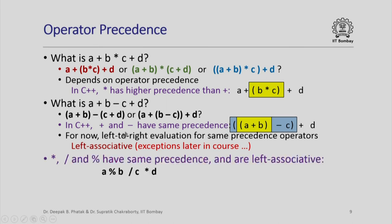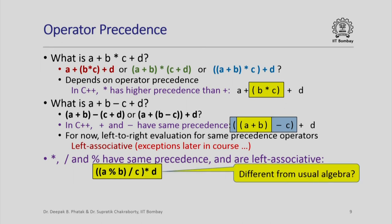Just as plus and minus have the same precedence, multiplication, division, and the remainder operator also have the same precedence, and their precedence is higher than that of plus and minus. These three operators are also left associative. So for an expression involving all three — for example A percent B divided by C multiplied by D — we first evaluate A percent B, then divide by C, and finally multiply by D.